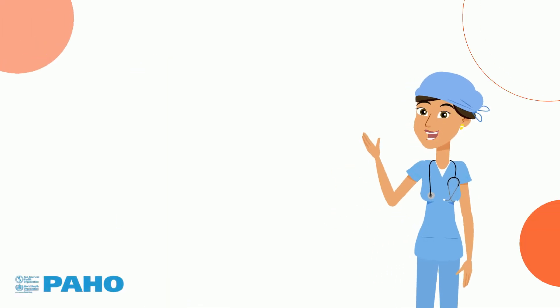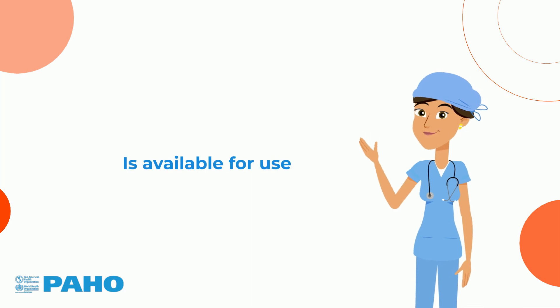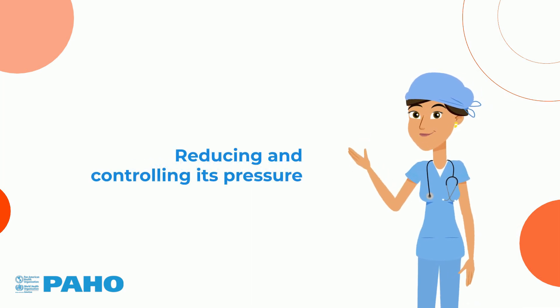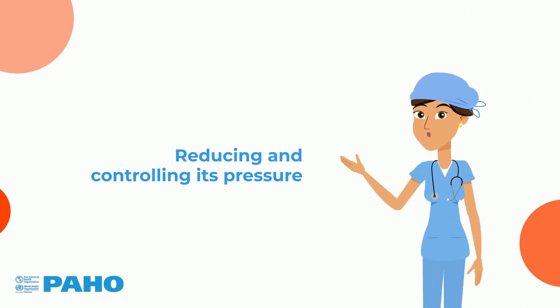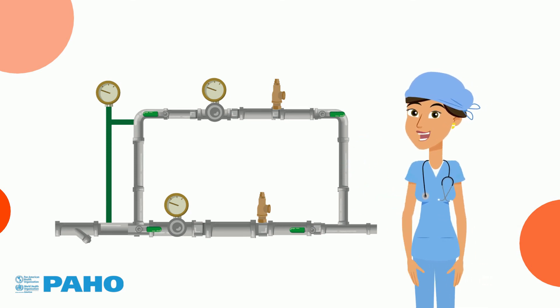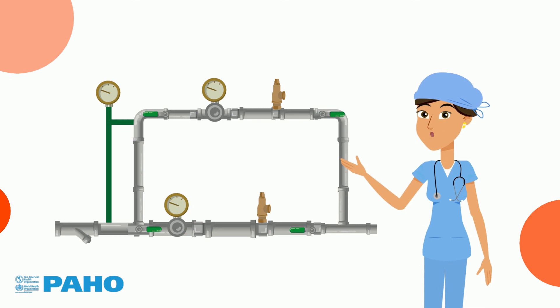Once evaporated, the oxygen is available for use by simply reducing and controlling its pressure. This can be done by using a pressure reduction station, a device that will be the subject of the next video in this series.